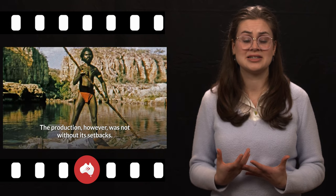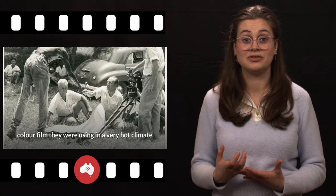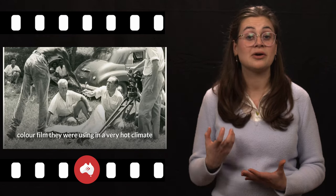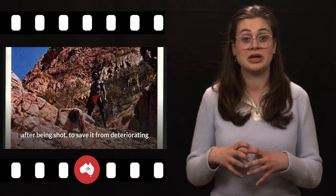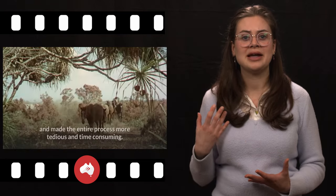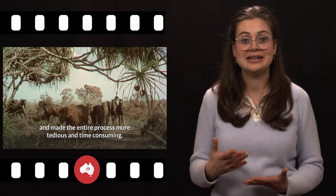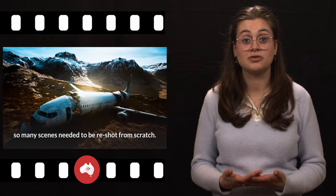The production, however, was not without its setbacks. The crew was regularly challenged by the heat-sensitive color film they were using in a very hot climate, meaning it needed to be stored in caves immediately after being shot to save it from deteriorating, which delayed the schedule and made the entire process more tedious and time-consuming. An entire roll of film was also decimated in a plane crash en route to England where it was to be processed, so many scenes needed to be reshot from scratch.